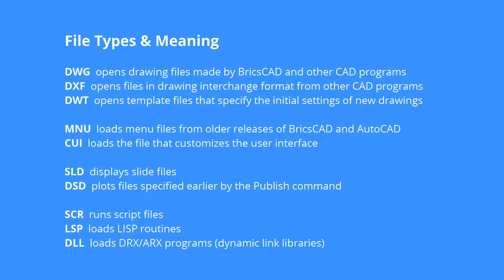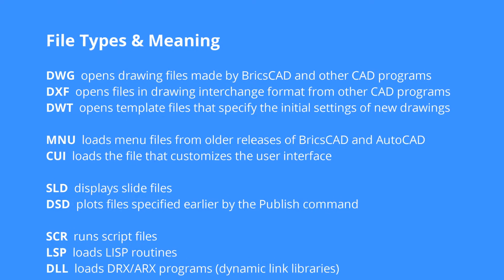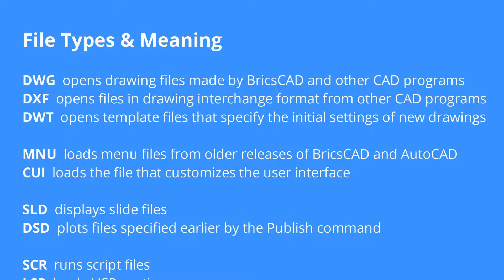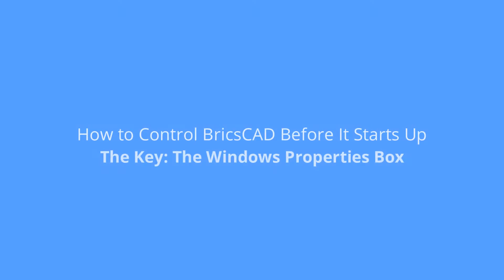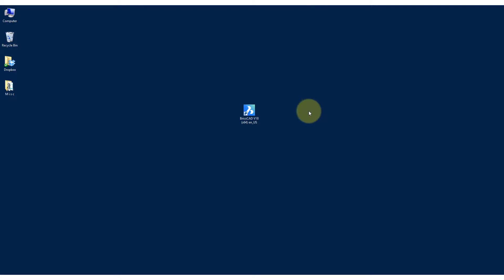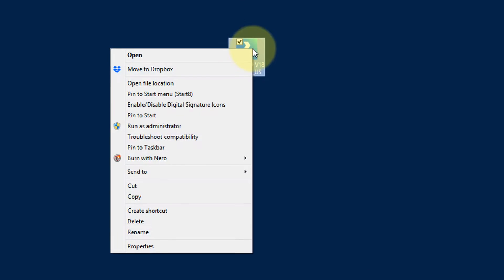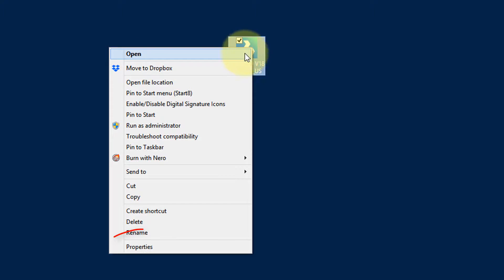Here's a list of all the files that BricsCAD can start up with — they're automatically loaded as soon as it starts. A few that might be of interest are the DWG file, which is a regular drawing; a menu file, which would load a different menu; and the DSD file, which would turn BricsCAD into an automatic printing utility. The key to doing this is to right-click the BricsCAD icon.